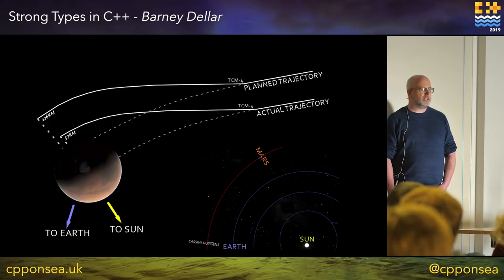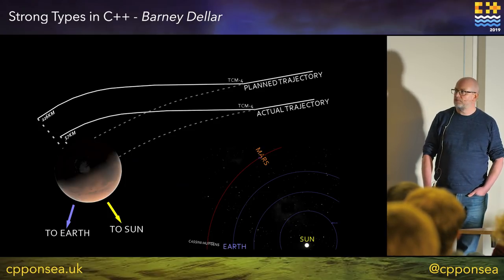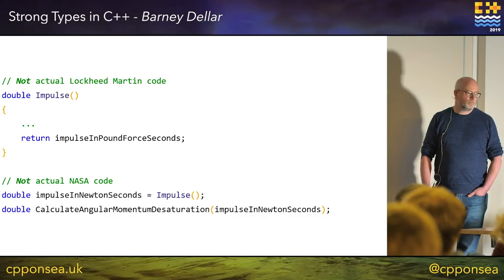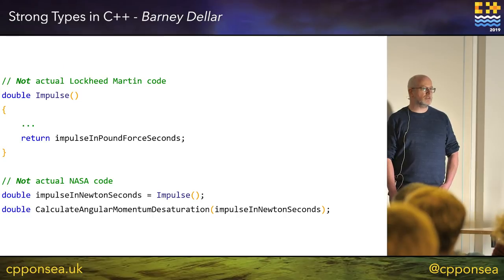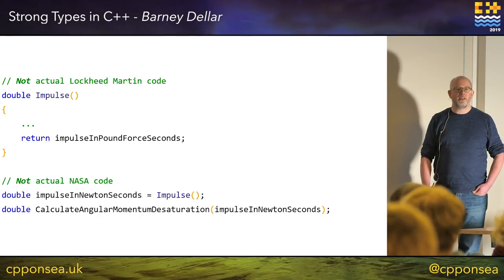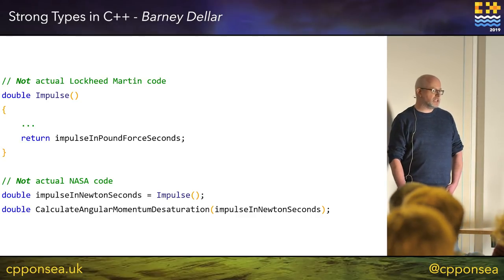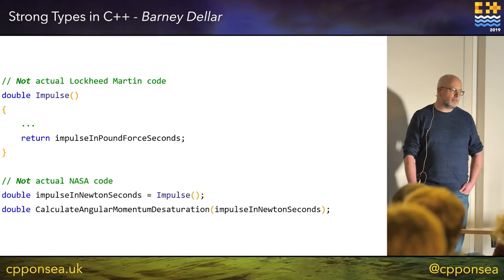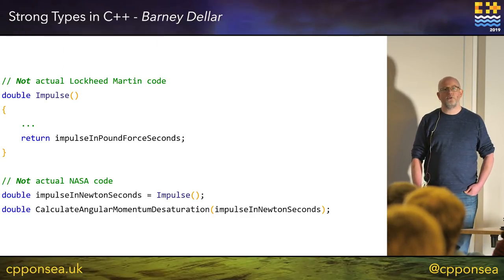But I said just now that C++ was strongly typed — I thought we had compiler support for this kind of thing. The trouble is that the impulse is stored as a double. Whether it's in Newton-seconds or pound-force seconds, it's still just a double. The type of Newton-seconds is double. The type of pound-force seconds is double. They are the same type. We could obviously write unit tests for this, but then we're back to the same problem we had in Python, where we have to write tests because the compiler isn't there to catch our mistakes for us.